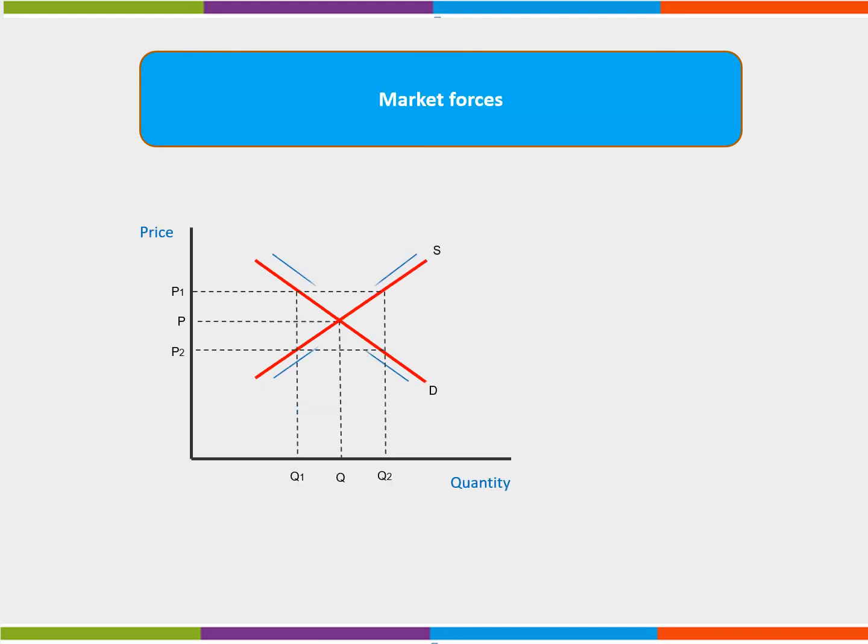Market forces are always pushing prices towards market equilibrium, the price at which demand equals supply and there are no products left over in the market. Too much supply leads to lower prices. Too much demand to higher prices. Where demand is equal to supply, we have the market equilibrium price.